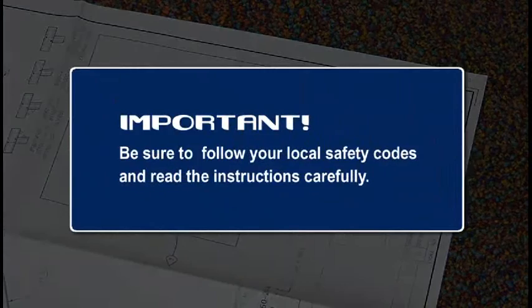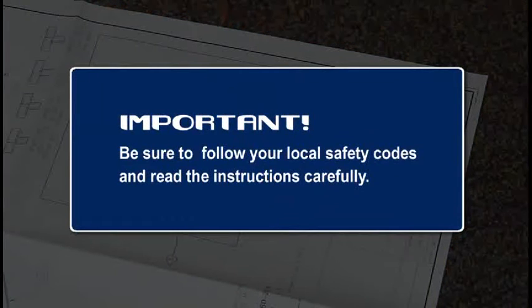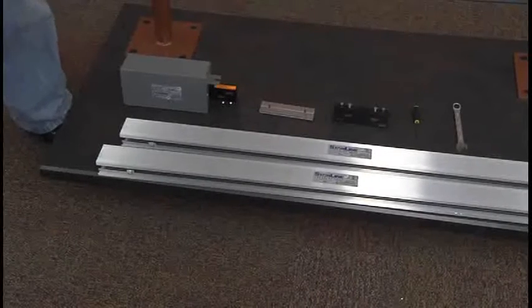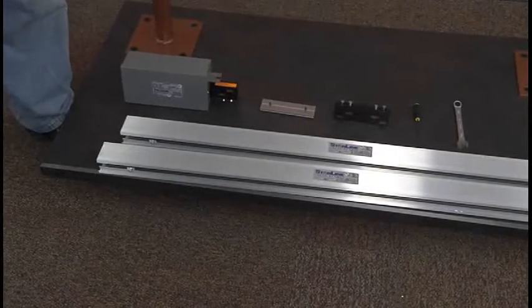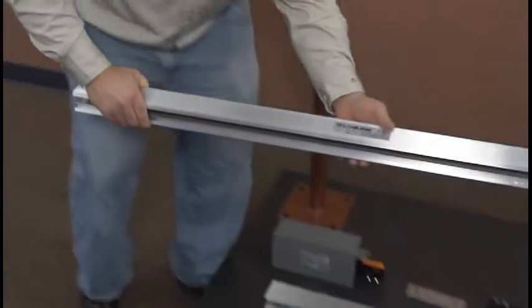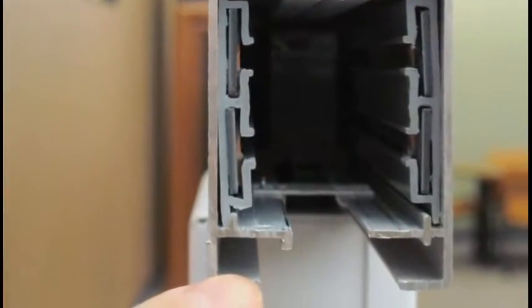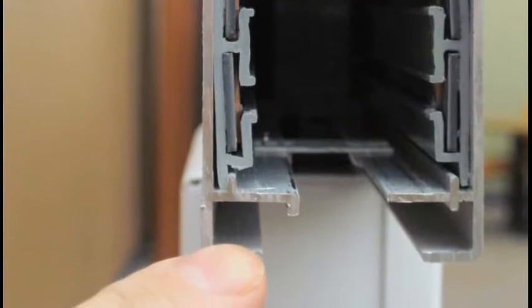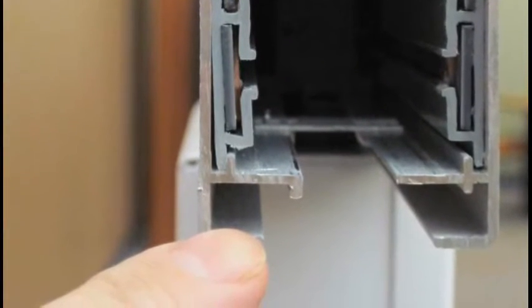Also, be sure to first check and abide by all local safety codes and to read the enclosed installation instructions carefully. Once you are ready to begin installing Starline Track Busway, you must determine the orientation or which direction the busway should be hung. This will be determined by which way you would like the plugs to face.